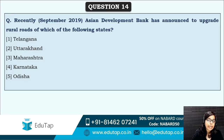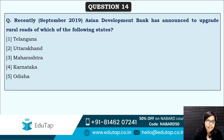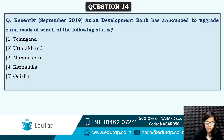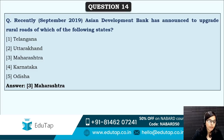Next: the Asian Development Bank has announced to upgrade rural roads of which of the following states? Generally, ADB, AIIB, or World Bank give large amounts to India to upgrade rural roads, education, or health sectors. Most of you are saying answer three — yes, that is correct. Maharashtra is the state to which ADB will provide money to upgrade rural roads.